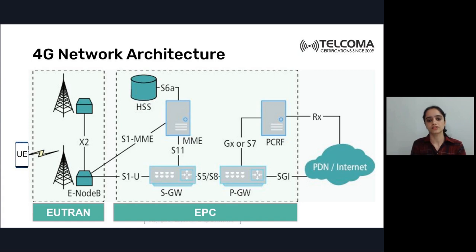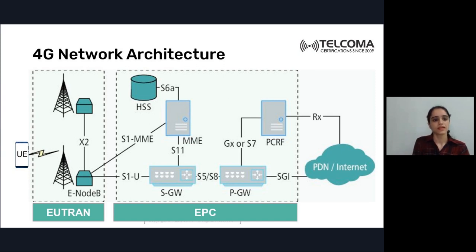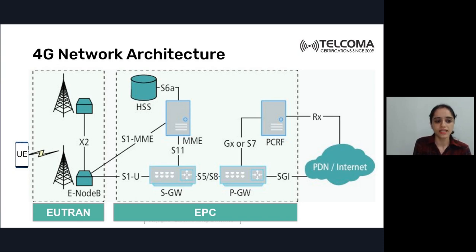In the detailed architecture, the UE is connected to eNodeB via the UU interface. eNodeB is evolved Node B — Node B exists in 3G, while 4G uses eNodeB. Two eNodeBs are connected to one another via the X2 interface.